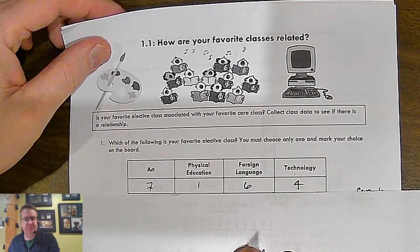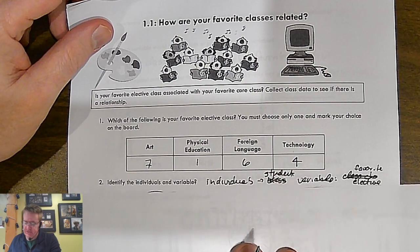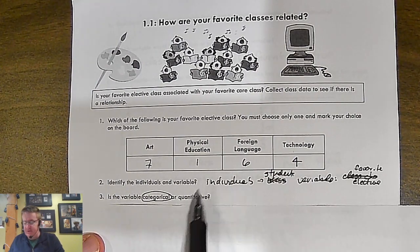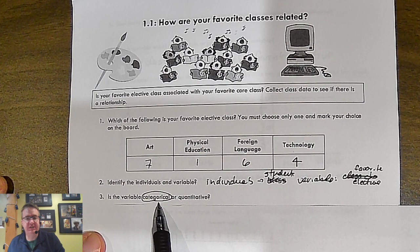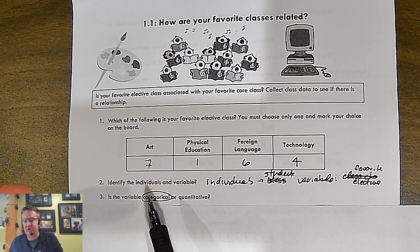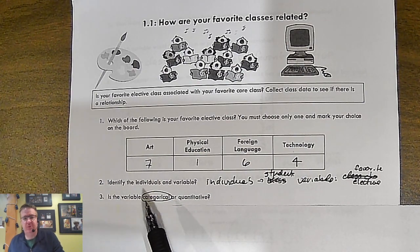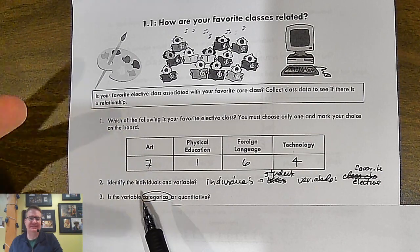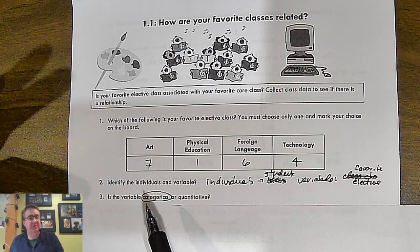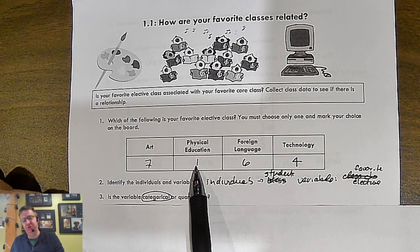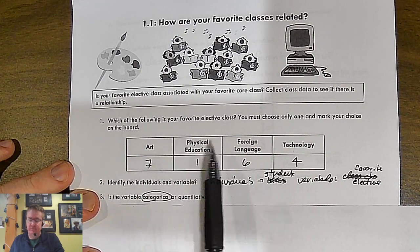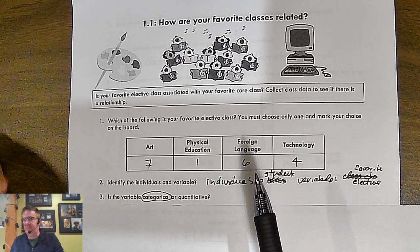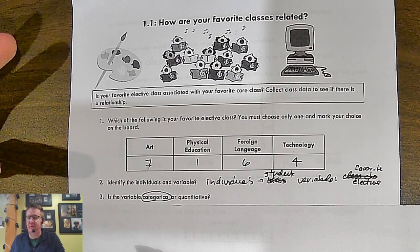The first question is what type of data is this? Is this categorical or quantitative? It's categorical. Why is it categorical? Because your answer is a topic, a word, that type of thing. It's not a quantity. What's your favorite elective? Physical education, art, foreign language, that type of thing. If you can't measure it, it's categorical data.